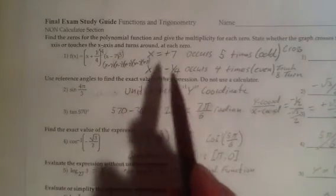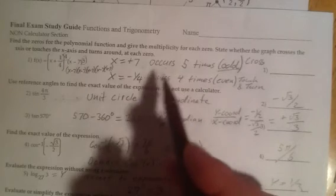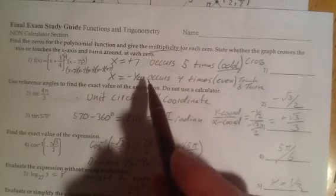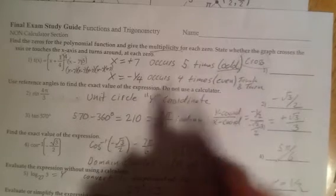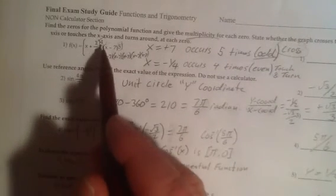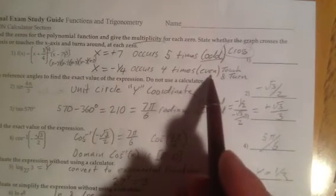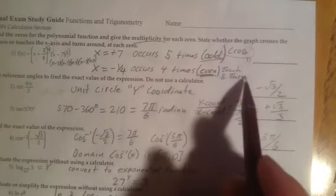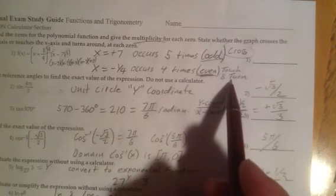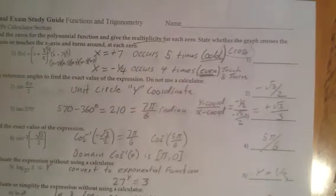5 is an odd number. If my occurrence or my multiplicity is odd, it will cross the x-axis. Now what about this guy here? It appears 4 times. It has a multiplicity of 4. What's the big deal about that? It's not so much the 4. It's the fact that 4 is an even number. So that will be what we call a touch and turn. So this has a multiplicity of 5, and it will cross. This has a multiplicity of 4. It will touch and turn.